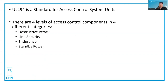There are four levels of access control components in four different categories. The standard covers destructive attack, line security, endurance, and standby power. Clearly, this is a standard for access control system units.